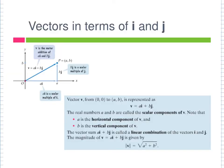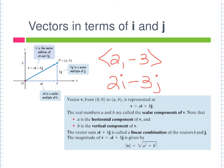Everything done in component form can also be written in linear form — a linear combination in terms of i and j. The i goes with the change in x and j goes with the change in y (i comes before j, just as x comes before y). So component form ⟨2, −3⟩ becomes 2i − 3j in linear form. These are interchangeable. If a question is given in ij format, answer in ij format; whatever is in front of i is your a, and in front of j is your b.